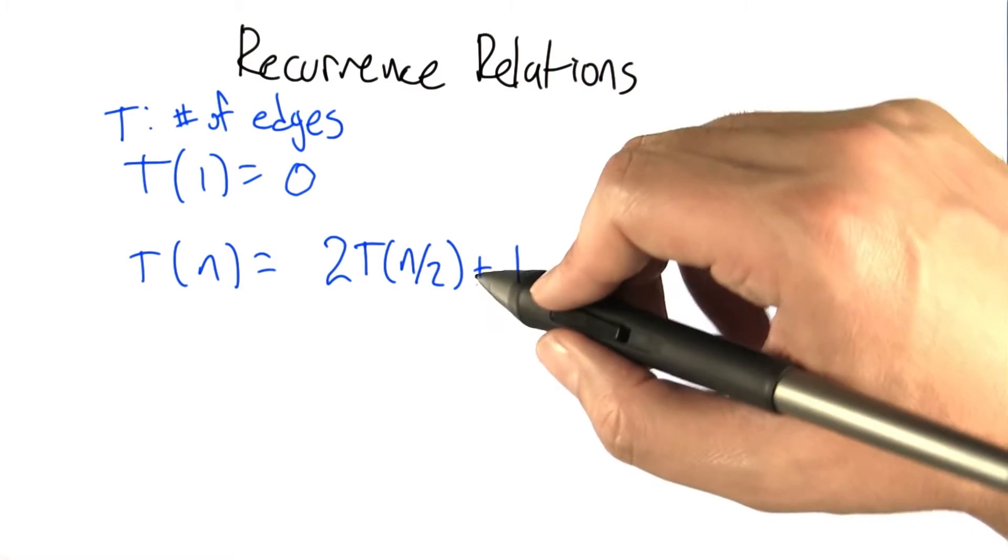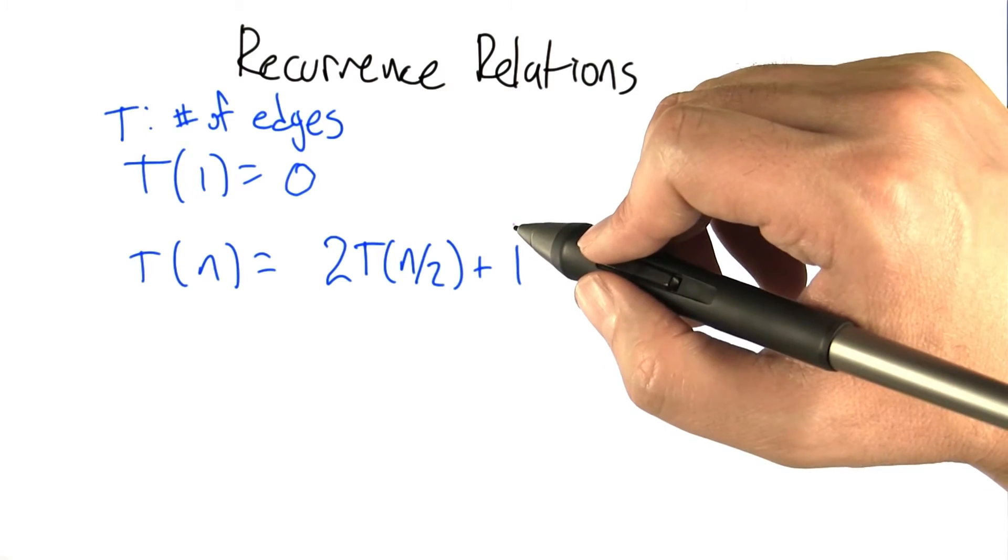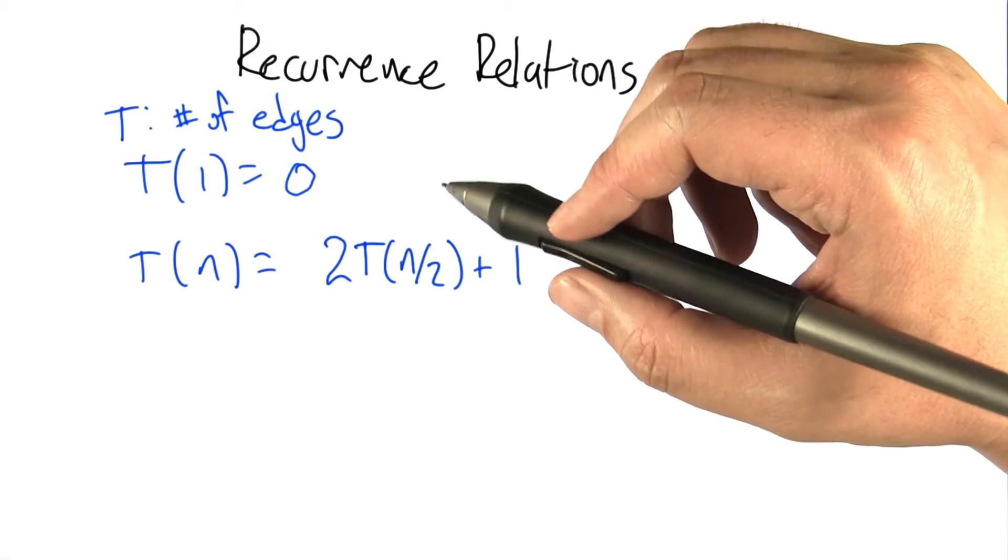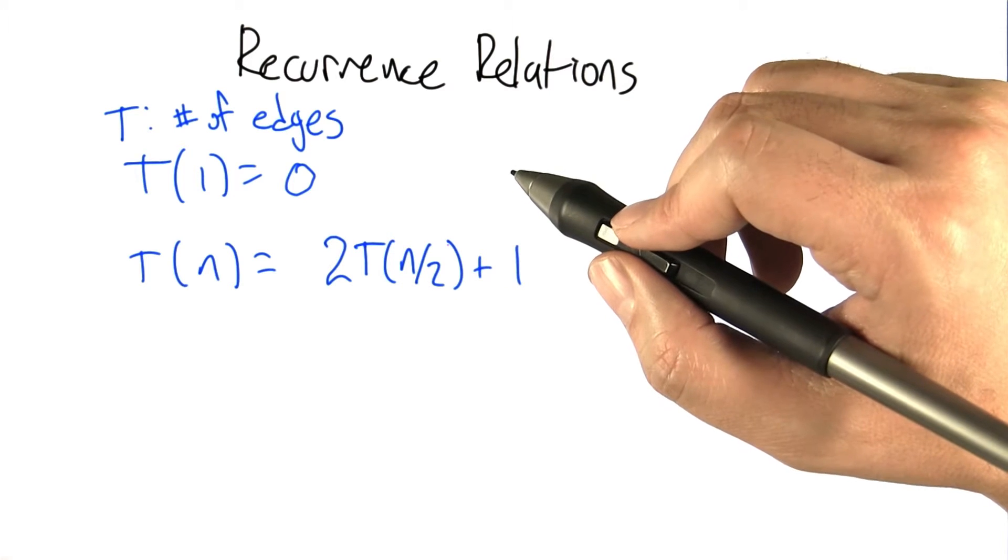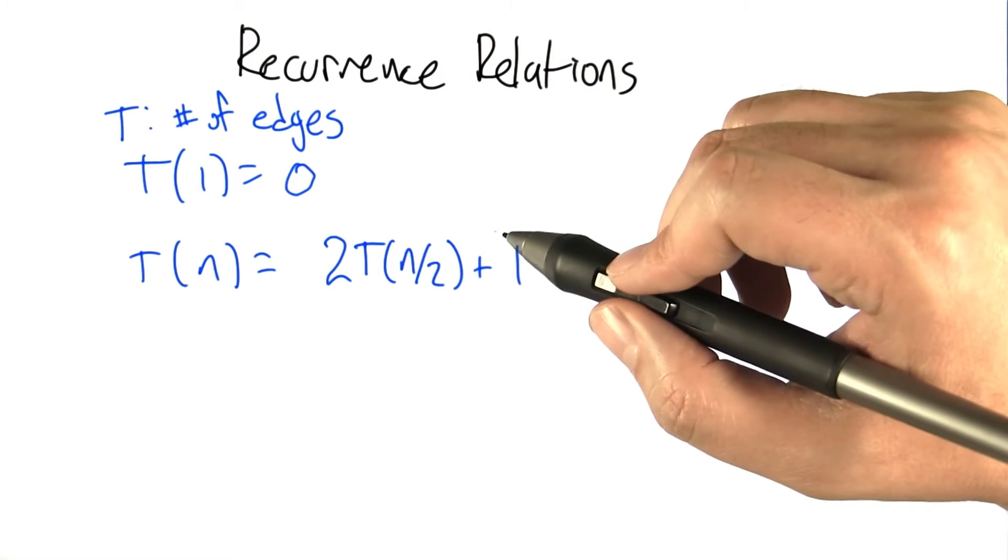So this now is a recurrence relation for the number of edges. Now, we know already what this is going to be. There's going to be n-1 edges in a tree with n nodes. Let's go through this process anyway of solving a recurrence relation because this is going to be a useful tool.